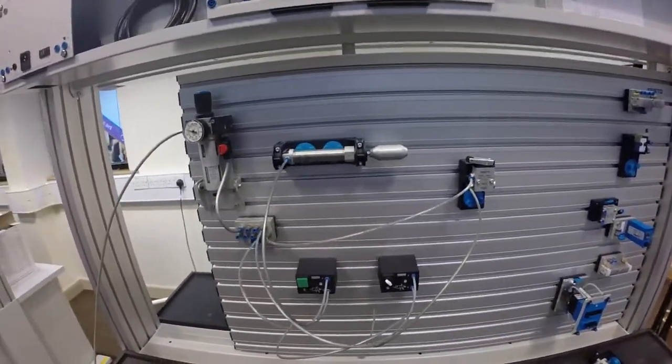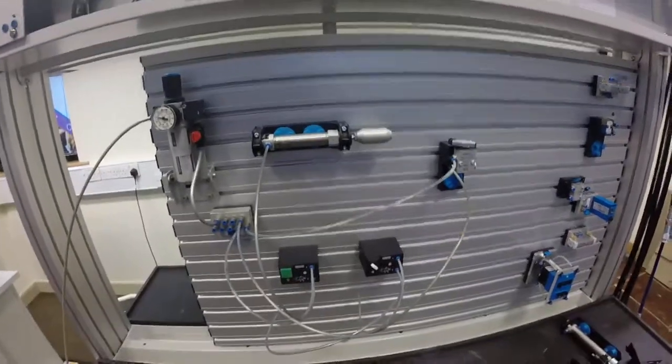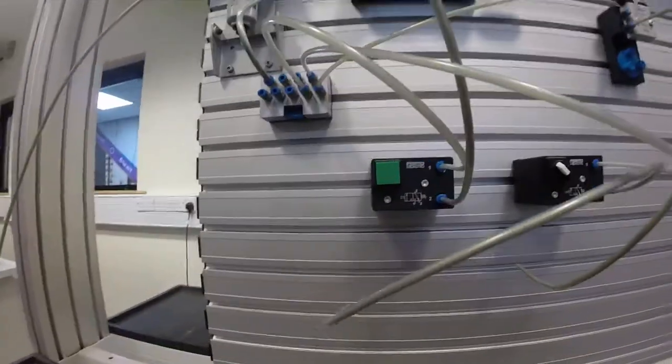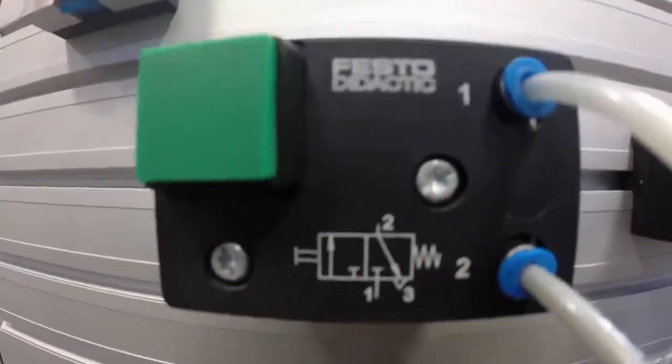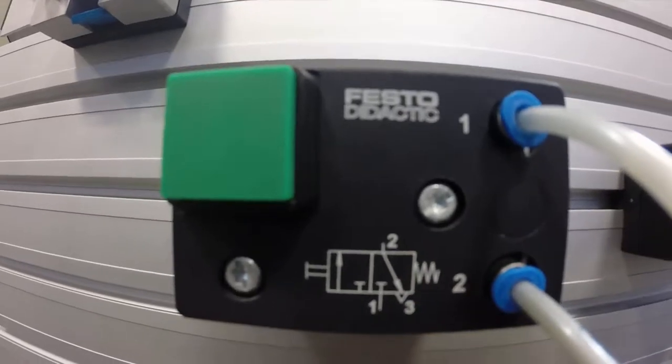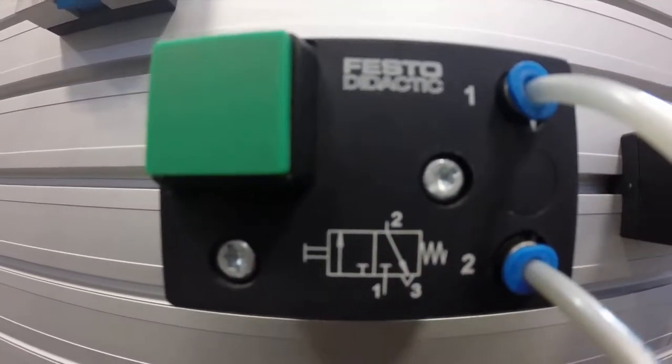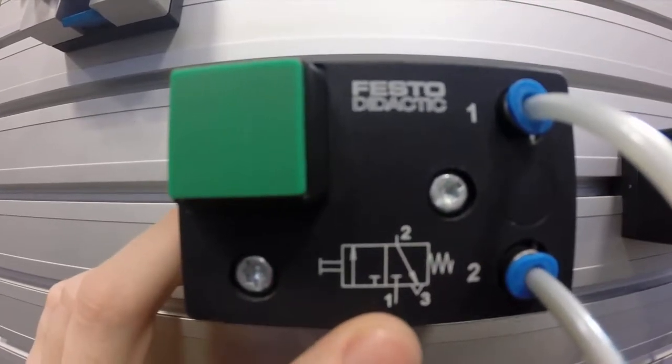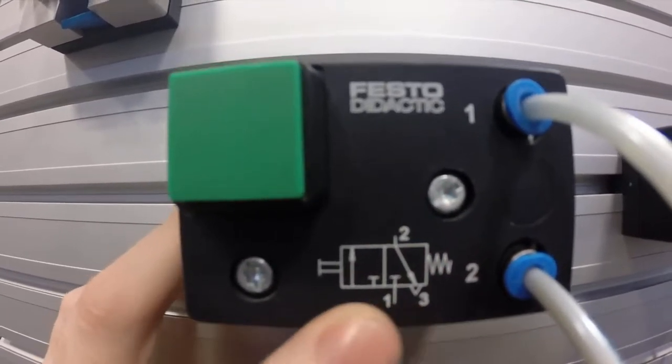A quick video to look at some of the direction control valves that we have on offer and how to use them. If I zoom in here, you can see the circuit diagram nice and clear. On this piece of equipment, we have a 3-2 direction control valve - three ports and two switching positions, basically on and off.